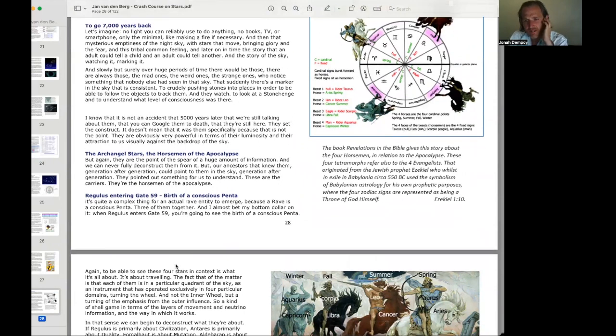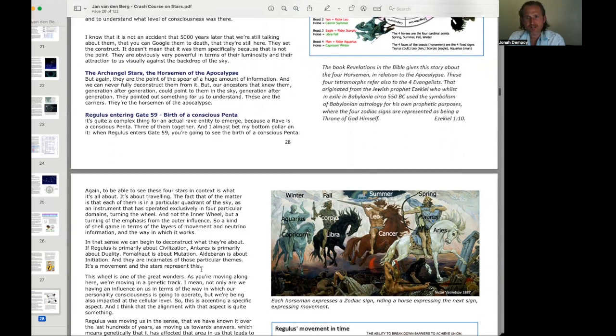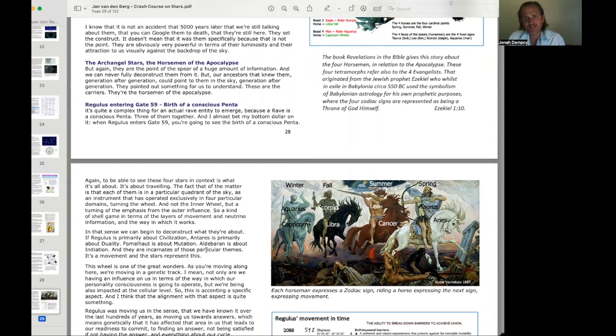To be able to see these four stars in the context of what it's all about. It's about traveling. The fact of the matter is that each of them is in a particular quadrant of the sky, as an instrument that has operated exclusively in four particular domains, turning the wheel. Not the inner wheel, but a turning of the emphasis from the outer influence. If Regulus is primarily about civilization, Antares is primarily about duality. Fomalhaut is about mutation. Aldebaran is about initiation.